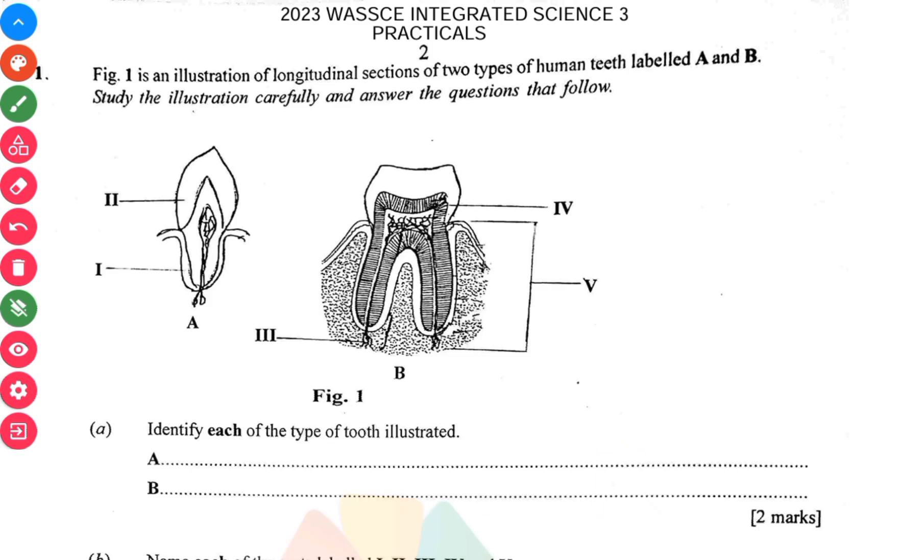The IV is the dentine, which forms the greater part of the tooth. As you see the tooth, there's the enamel that you see at the top, but what really gives the tooth its mass is the dentine. Then the V is the root. The root serves as an anchor for the tooth.